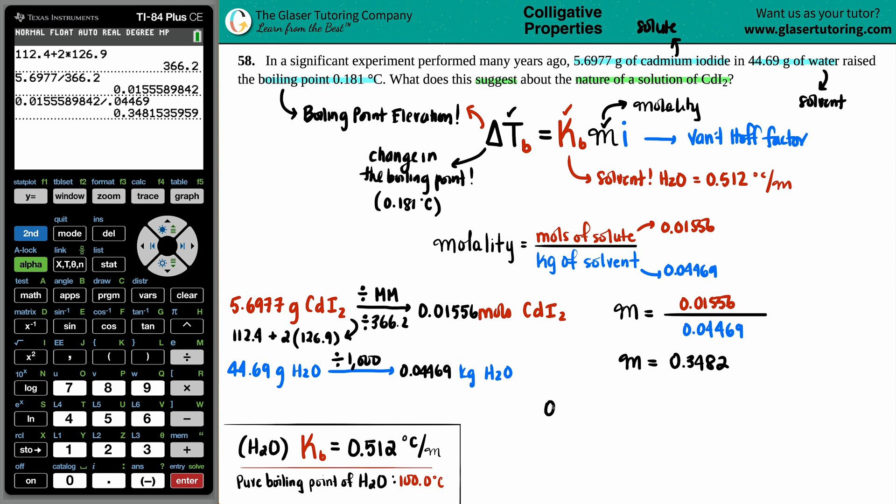So let's see. Delta Tb 0.181 equals the Kb, which is 0.512, times the molality, which is 0.3482, and then times by I. So essentially, we could get those two numbers to multiply together. 0.181 equals 0.512 times that molality value. I'll just use the whole number. And I get roughly 0.178, and this is times by I. So to get I by itself, to find out whether the cadmium iodide is going to be an electrolyte or a non-electrolyte, we're just going to divide it and see what that I value is.